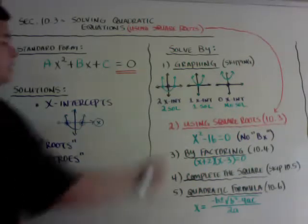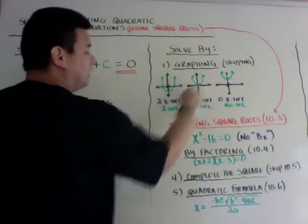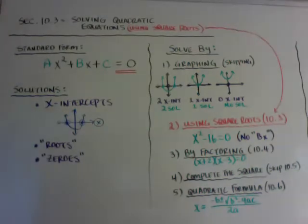If it only hits the x-axis and bounces off, you're going to have one x-intercept, which is where it hits the x-axis, and you're going to have one solution.